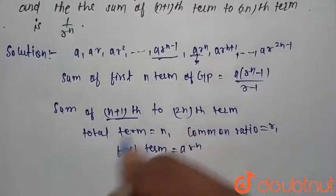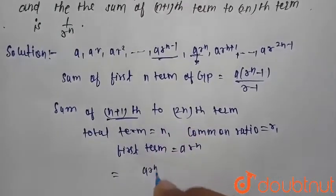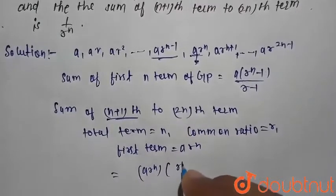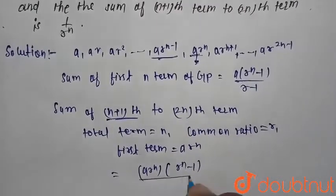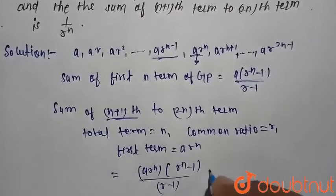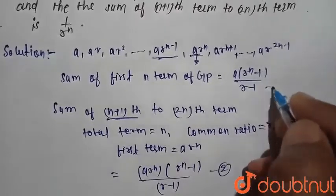So we want to find the sum of this term, which is equal to ar raise to power n into r raise to power n minus 1 divided by r minus 1. This is equation number 2 and this is equation number 1.